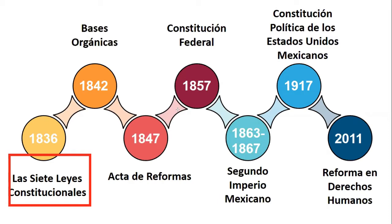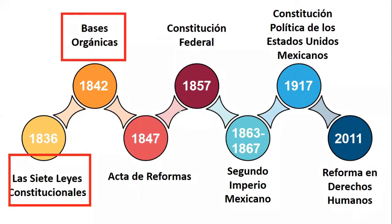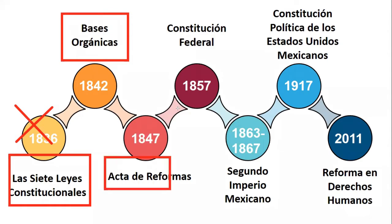Las bases orgánicas de la república del año de 1843 traen una consecuencia muy importante: se elimina el Supremo Poder Conservador que había sido asignado en 1836, haciendo una república centralista más moderada. En esos años se da la famosa intervención de los Estados Unidos, cuya consecuencia fue la pérdida de la mitad de nuestro territorio. Para el año de 1847 se promulga el Acta de Reformas; ya habiendo perdido nuestro territorio, se retoma la vigencia de la Constitución de 1824 y se incorpora una figura muy importante: el juicio de amparo, señalada previamente en la Constitución de Yucatán de 1841.